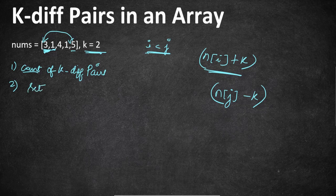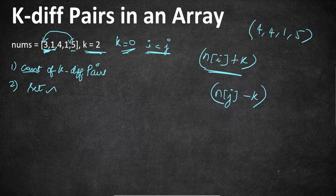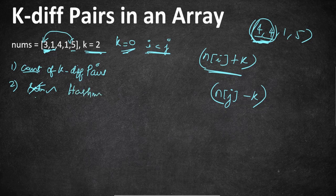For easier element lookup we need the right data structure. A set would ensure uniqueness, but there's a special case: when k equals 0, we need pairs like (4, 4), which requires knowing an element appears more than once. A set won't store counts, so instead we use a hashmap that stores each element as a key and its occurrence count as the value. We then check if element + k exists in the map, incrementing the result if so.